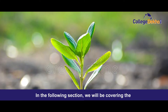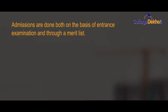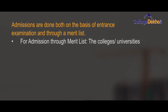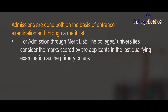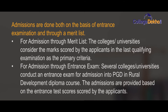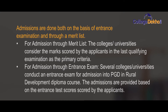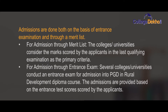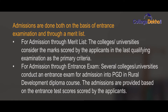In the following section, we will be covering the admission process for PGD in Rural Development. Admissions are done based on both entrance examination and through merit list. For admission through merit list, the colleges and universities consider the marks scored by the applicants in the last qualifying examination as the primary criteria. And for admission through entrance exam, several colleges and universities conduct an entrance exam for admission into PGD in Rural Development. The admissions are provided based on the scores of the admission exam.